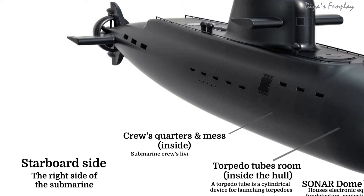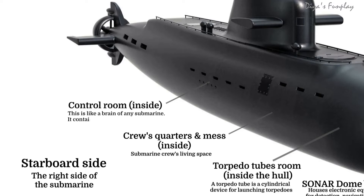Crew quarters and mess. This is the submarine crew's living space. Control room — this is like the brain of any submarine. It contains nearly all controls for the submarine's vital operations.